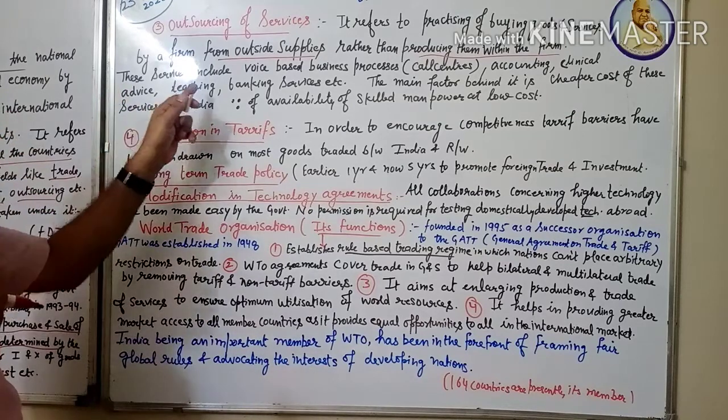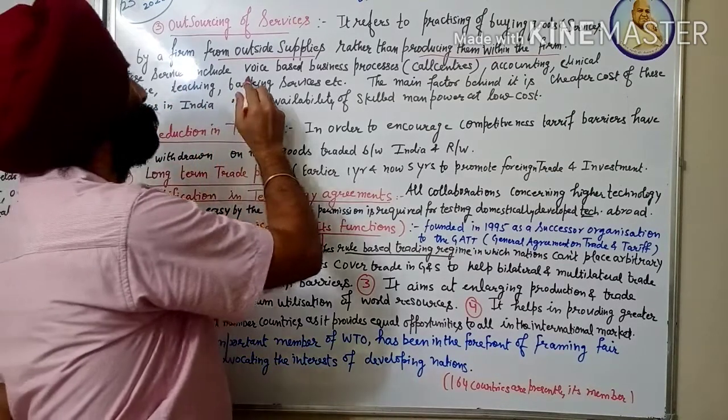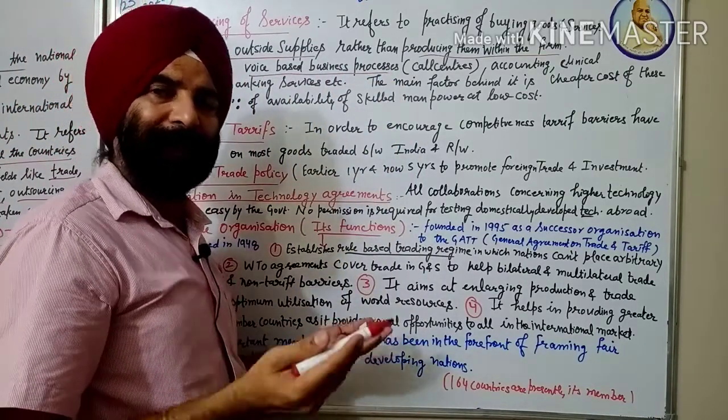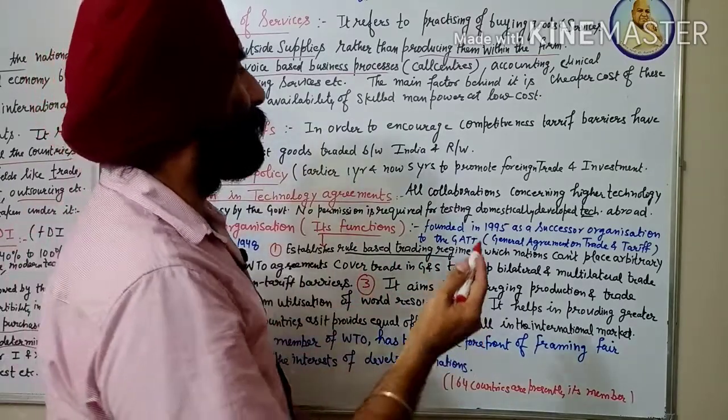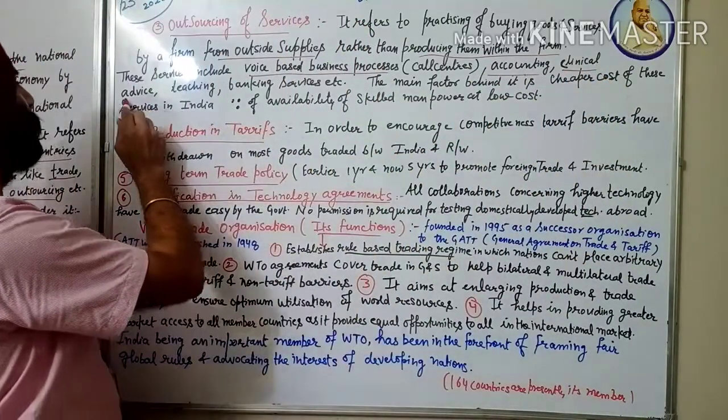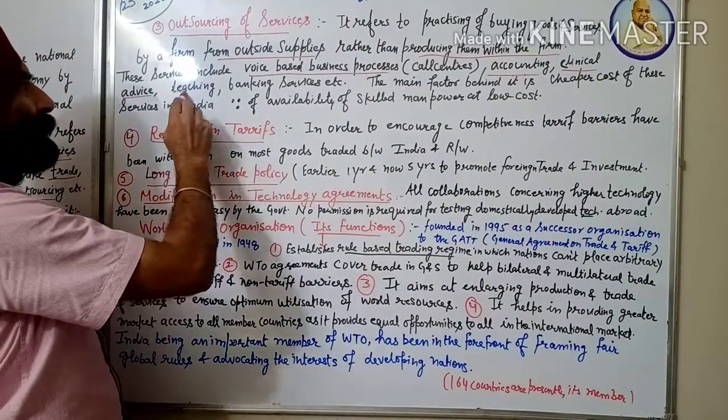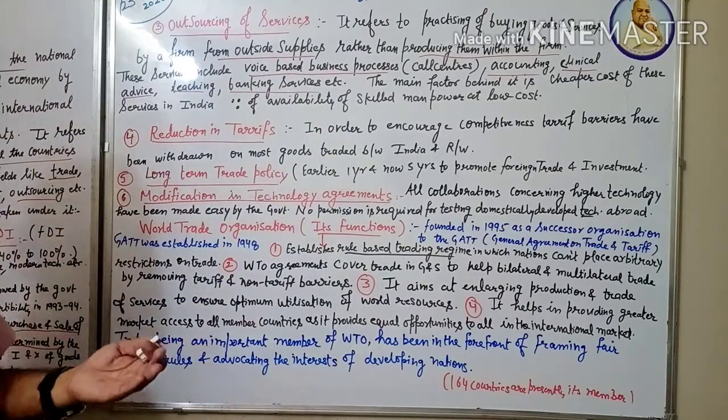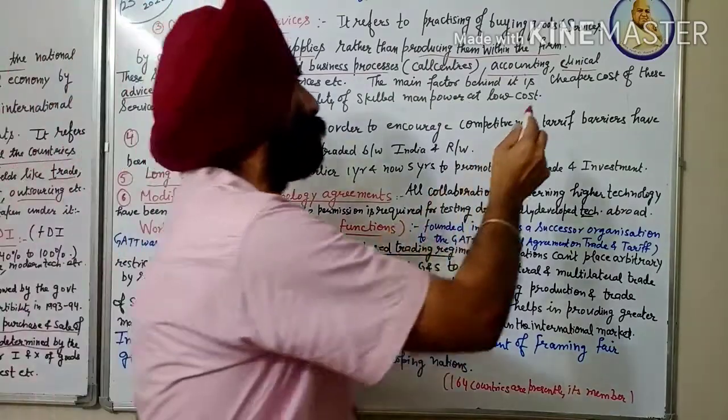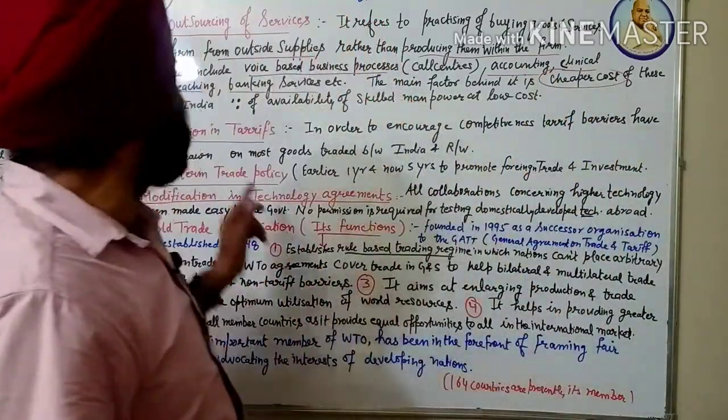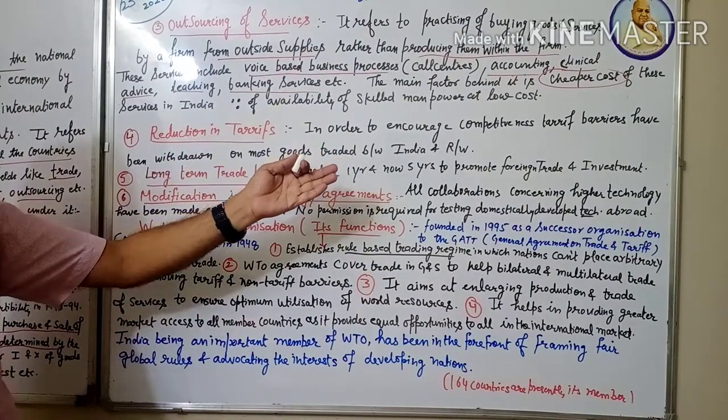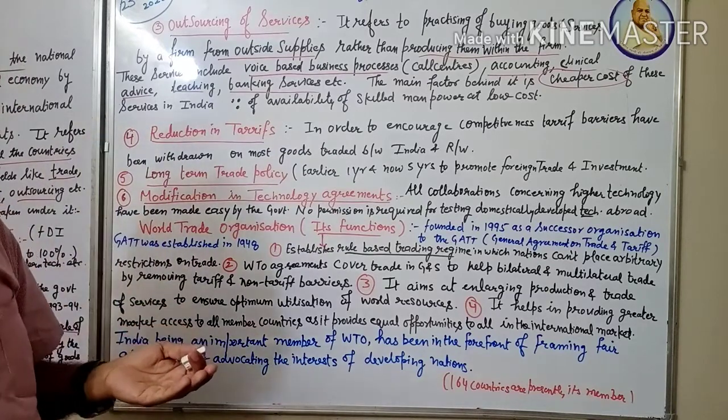These services include voice-based business processes like call centers - you can have any query, just call there and get the answer. Accounting services, clinical advice, teaching, banking services. These all are taken from outside. The main factor behind is what? They reduce their cost - cheap on cost of these services. In India, because we have skilled manpower which is available at low cost, therefore the firm can easily earn a good profit.